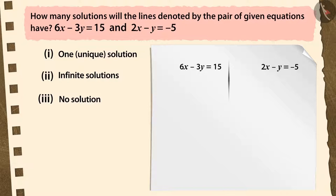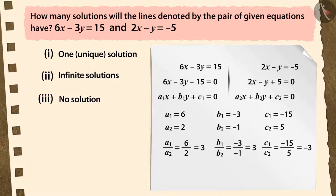Now, by comparing our equations with the general form of linear equations in two variables, you can see that a1 by a2 is equal to b1 by b2 which is not equal to c1 by c2.